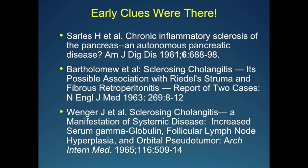So what lessons have I learned? First, why did AIP go unrecognized? There were early clues. André Saul is given credit for describing an autoimmune pancreatic disease in 1961. There was an article in the New England Journal of Medicine in 1963, a case report of steroid-responsive pancreatic mass and biliary obstruction. Another paper shortly after described a patient with gamma-globulin elevation and steroid response. So many features we currently recognize were recognized decades earlier, but the disease went unrecognized for four decades more.